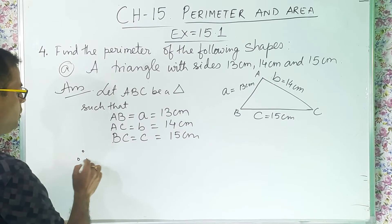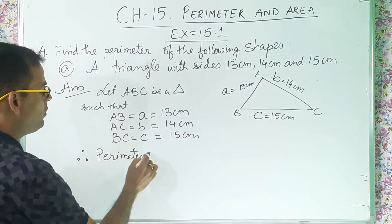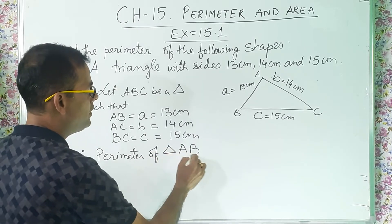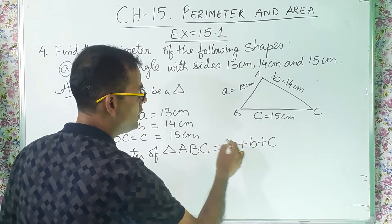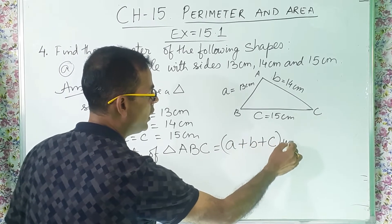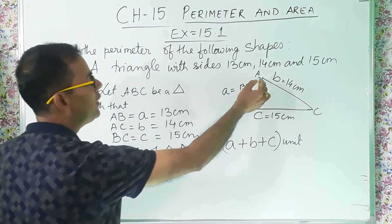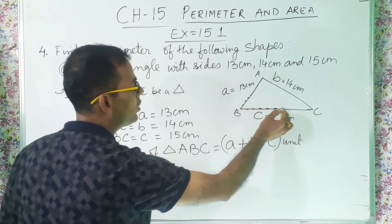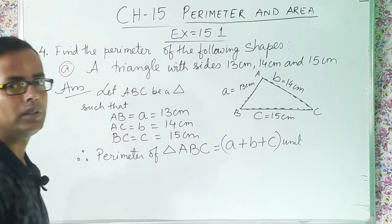Therefore, perimeter of triangle ABC equal to a plus b plus c. This is the formula. So now if you start walking, you are coming here, again you are walking here, again you are going back. So that is the perimeter.